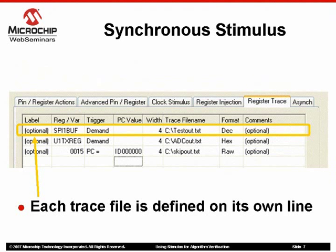In this diagram we are on the register trace tab, which shows three register trace stimulus definitions. The fields on the register trace tab are very similar to the register injection tab. The first column is an optional label, again not matching any source code symbols. The next is the register or symbol variable name that data will be traced from. The trigger type can be Demand or PC Equals. Demand means when a value is written to the register, the new value is simultaneously written to the trace file. PC Equals means a value is written to the trace file from the register when execution reaches the defined PC address. The remaining fields are identical to the register injection tab but are associated with the traced data.